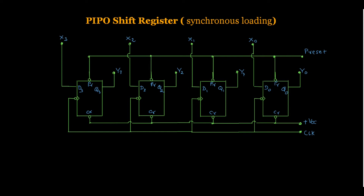As already mentioned, whenever we switch on the circuit, we have to clear out the shift register. So initially, connect the clear input to ground, so the clear input gets 0 — as a result the output of the flip-flop will be 0, 0, 0, 0. This means we have reset and cleared out the shift register.